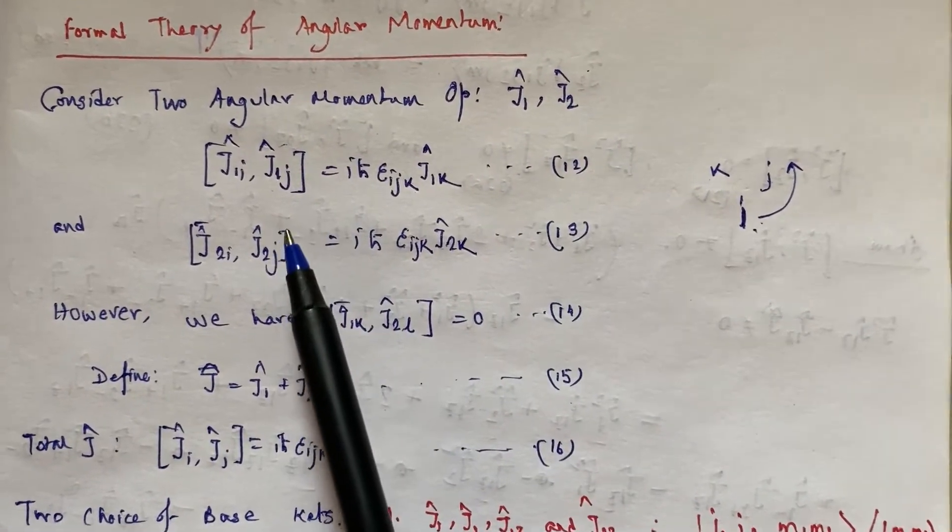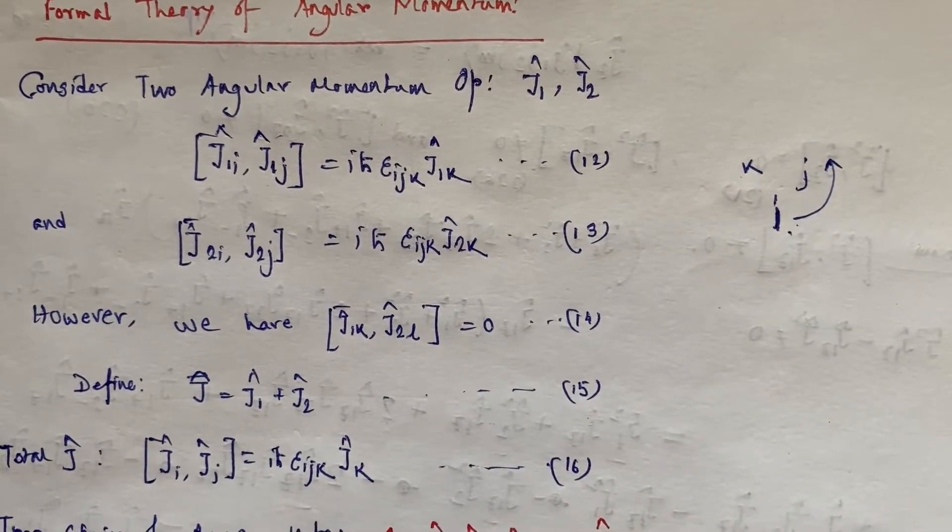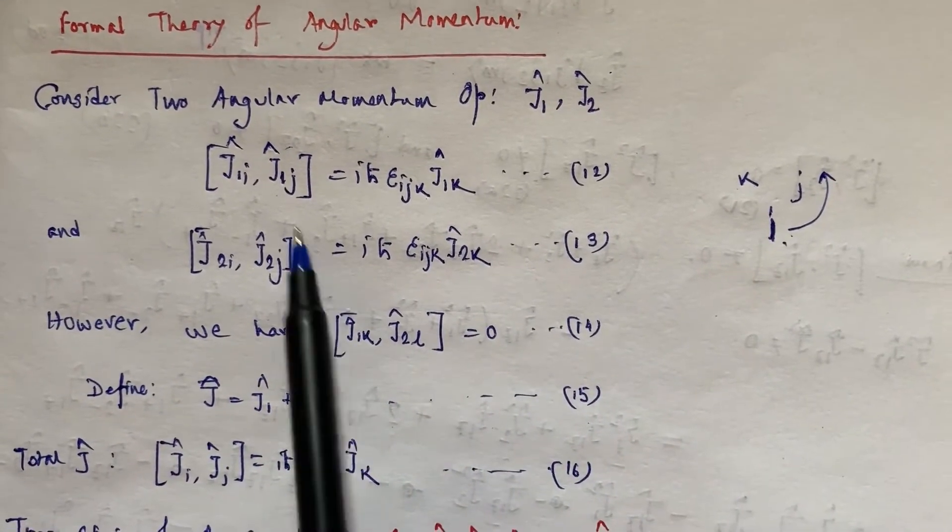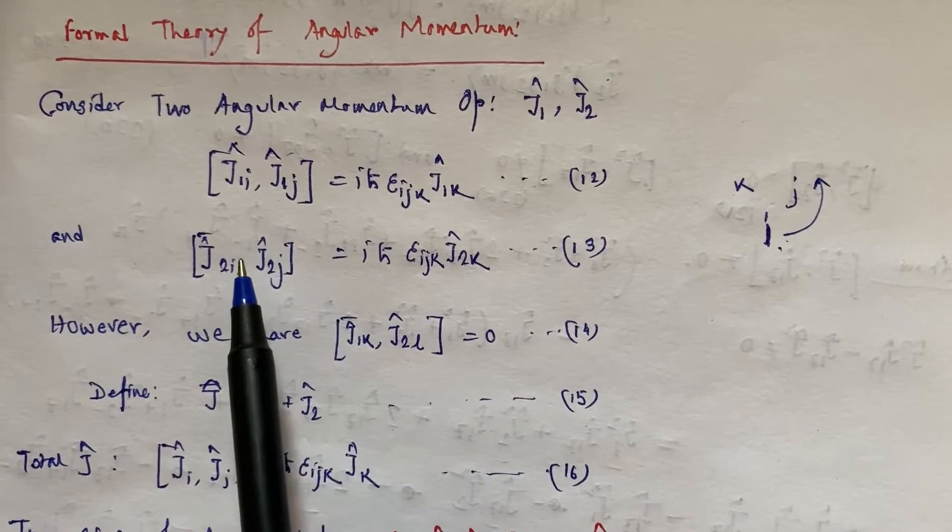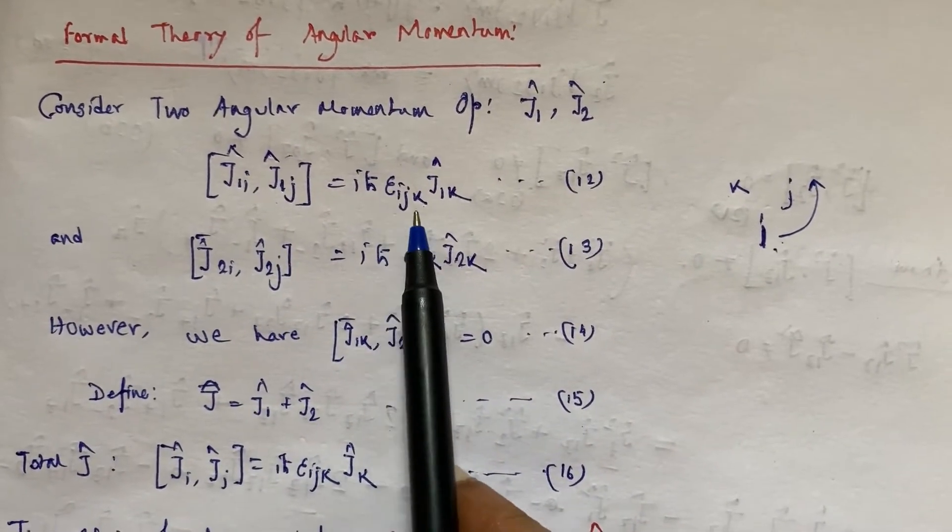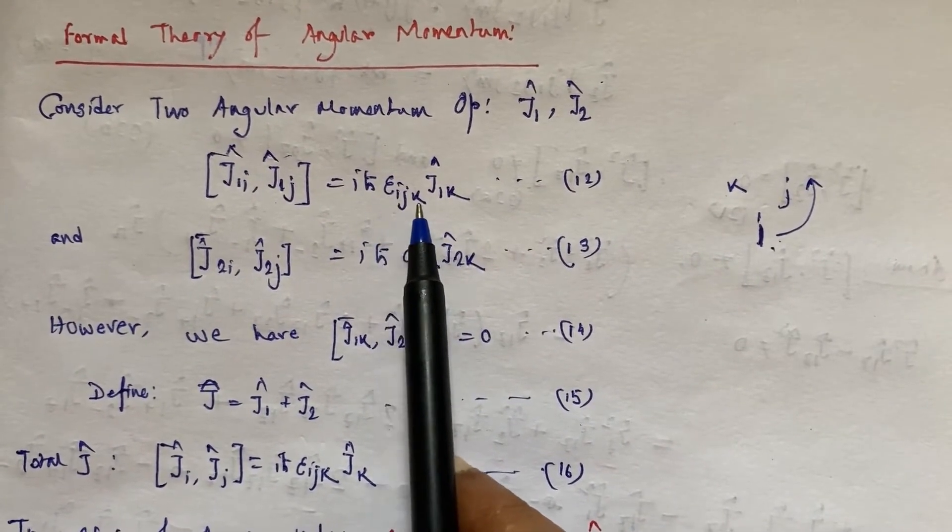This is the general commutation relation between the components of J. This symbol is called the Levi-Civita symbol, epsilon ijk.